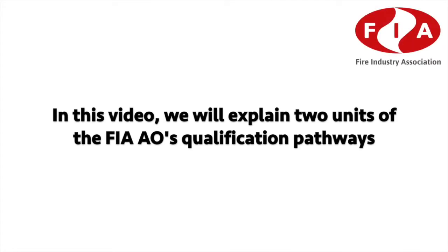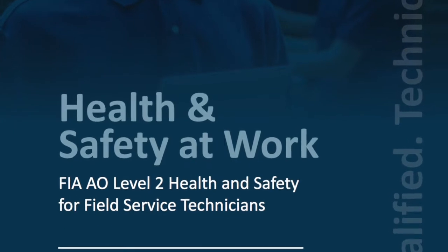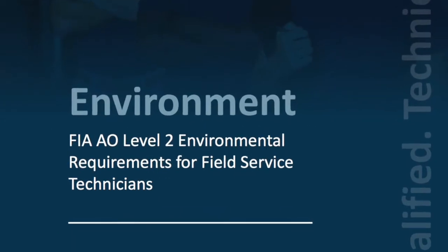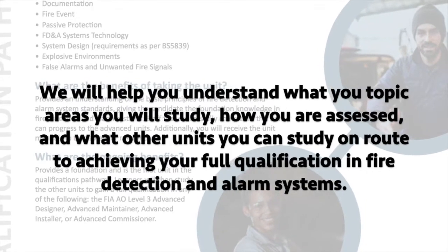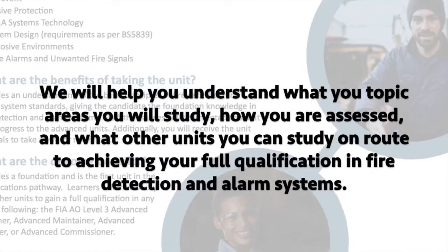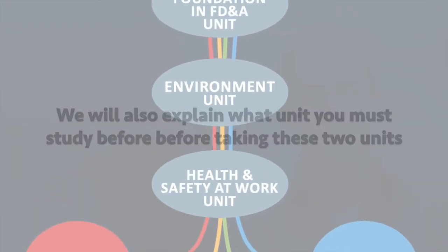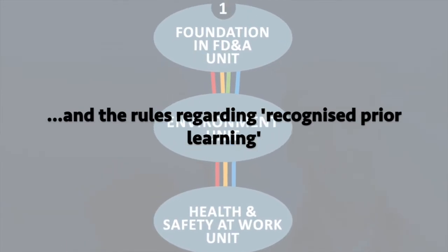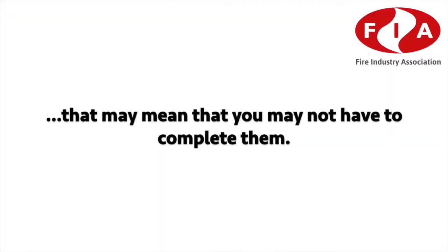In this video we will explain two units from the FIA AO's qualification pathways: the health and safety unit and the environmental unit. We'll help you understand what topic areas you'll study, how you're assessed, and what other units you can study en route to achieving your full qualification in fire detection and alarm systems. We'll also explain what units you must study before taking these two units and the rules regarding recognised prior learning that may mean you may not have to complete them.